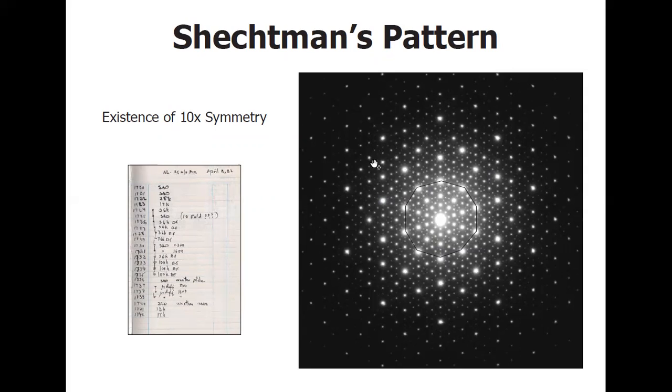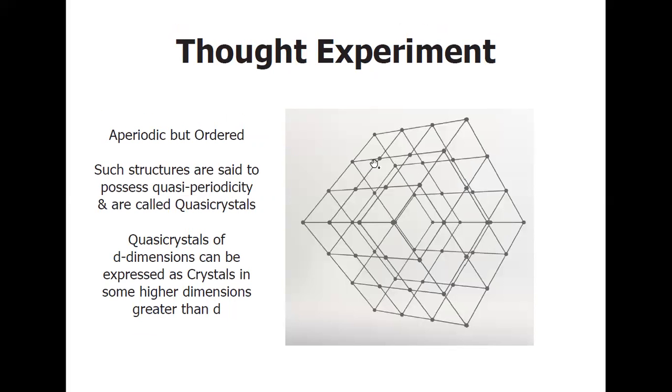To understand what we saw, we will look at a thought experiment. Take this periodic three-dimensional simple cubic lattice. Let us shine some light from any direction at some tilt, and we will observe a two-dimensional pattern at the screen opposite the crystal. This pattern might not be periodic, but it obviously is ordered as it forms as a result of this crystal.